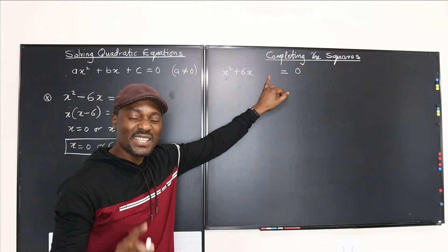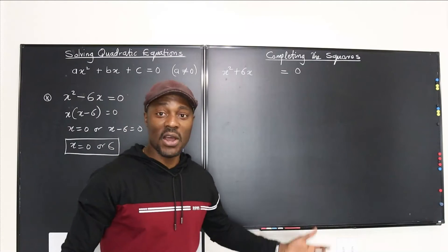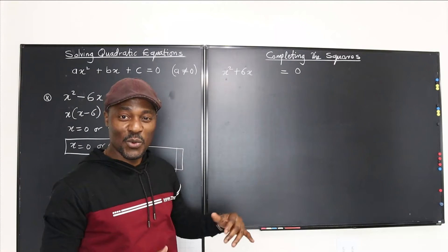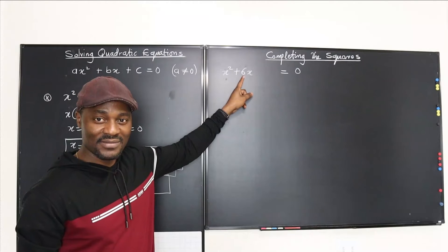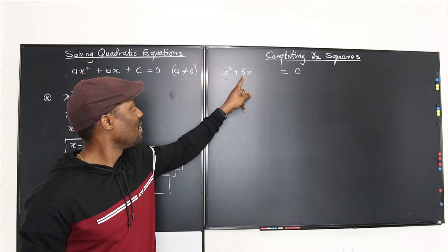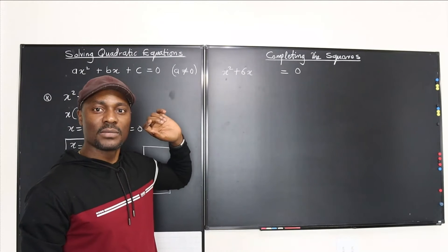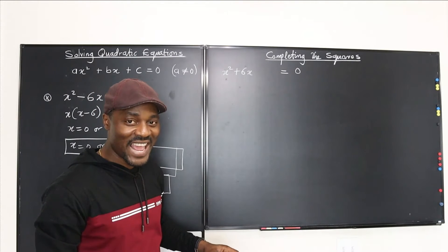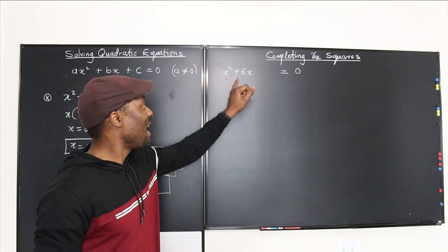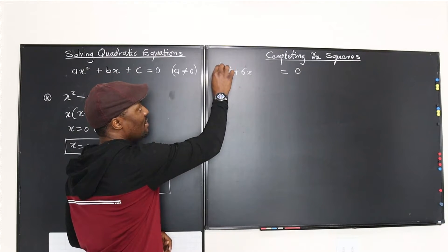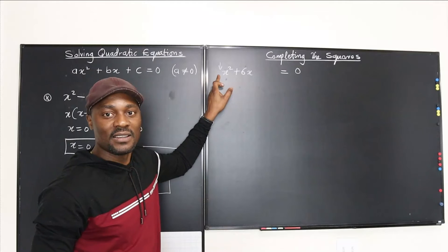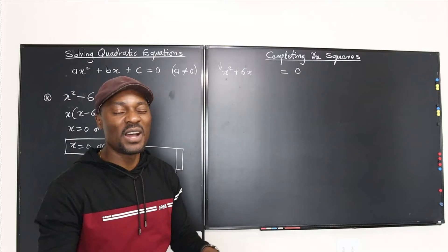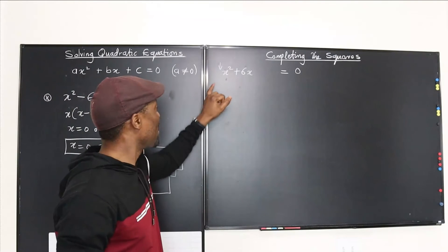We're going to add something to this expression. Based on mathematical discovery, the best thing to add is to look at the b term, divide it by 2 — half of 6 is 3 — then square that result to get 9. But first, the leading coefficient must be 1. If a is not 1, divide through by that constant first. That's very important.